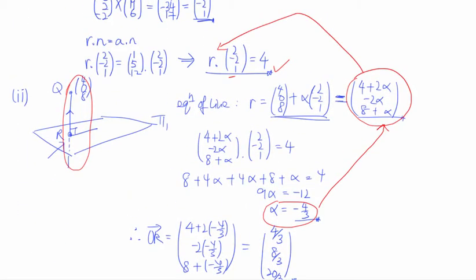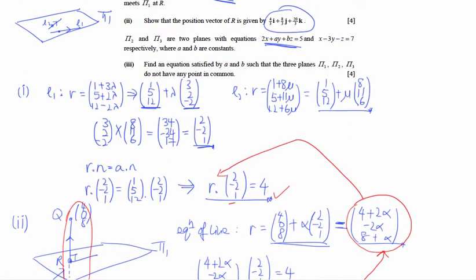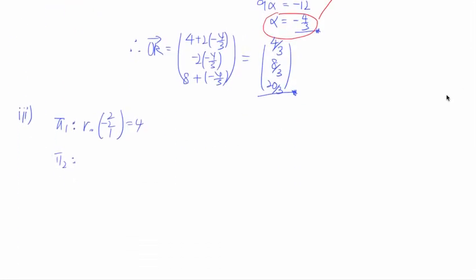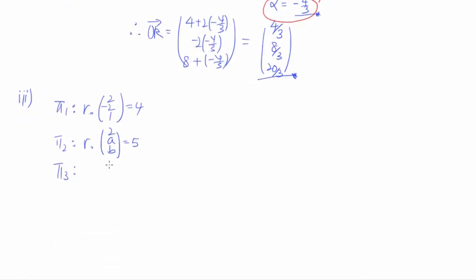Let us list all the equations. For π1, which we found earlier: r·(2, −2, 1) = 4, giving 2x − 2y + z = 4. For π2, we have r·(2, a, b) = 5. And π3 is r·(1, −3, −1) = 7, giving x − 3y − z = 7.